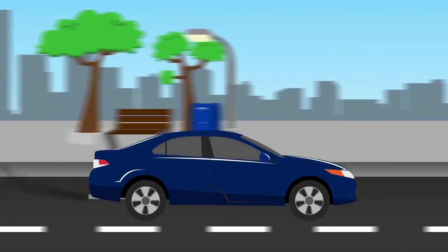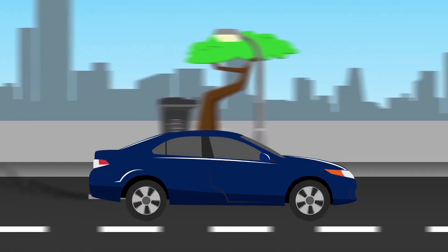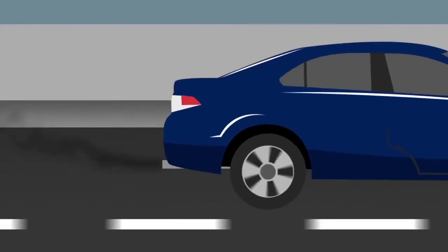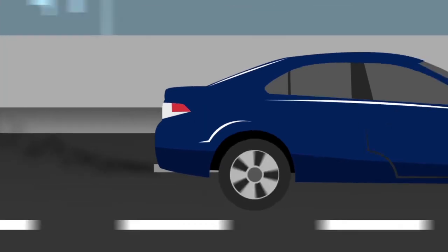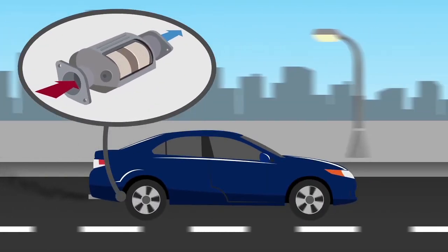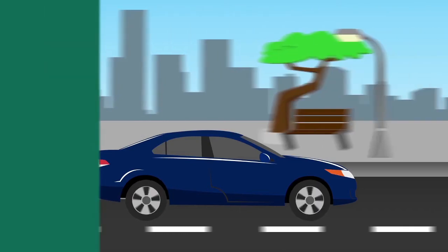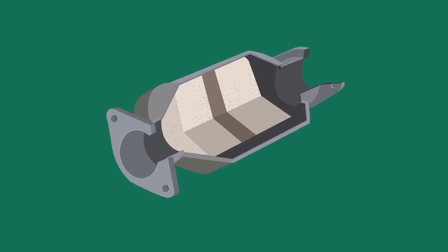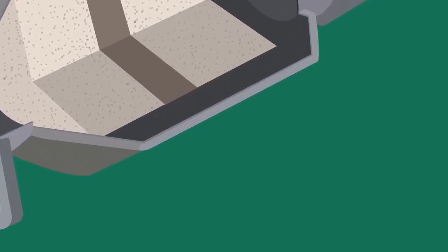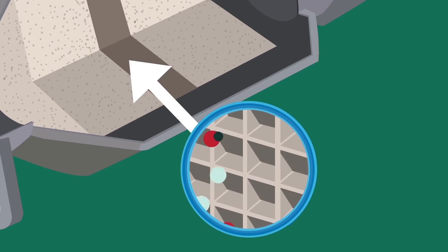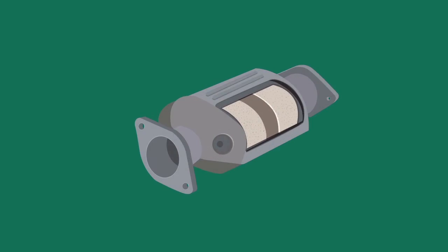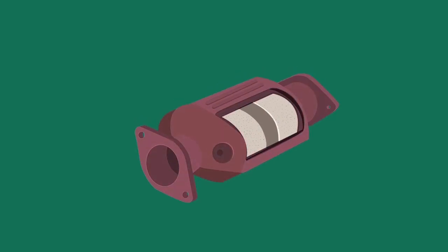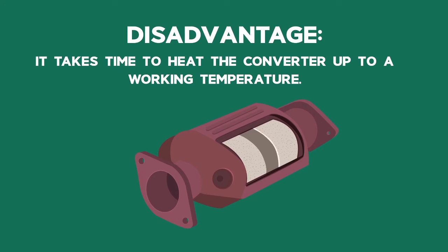This all happens very fast. The car is traveling along very rapidly and making gases all the time. The catalytic converter needs to speed up the reaction massively. One way that manufacturers do this is to spread the metals over a large structure so that the gases touch a very large area at the same time. You might have guessed that the converters work better when they are warm, so a disadvantage is that it takes time to heat the converter up to a working temperature.